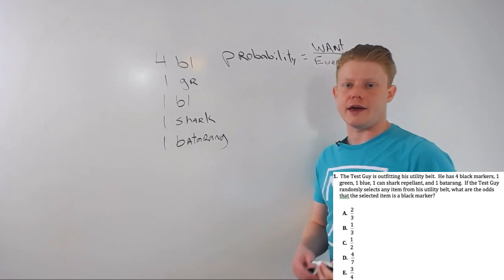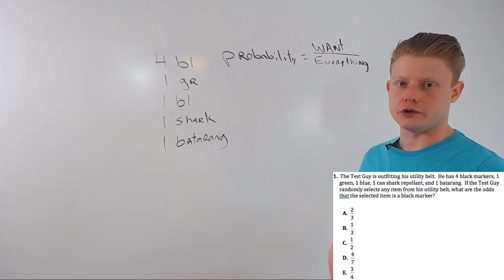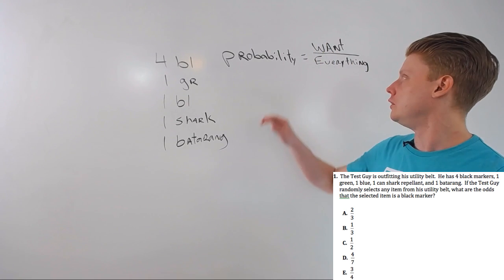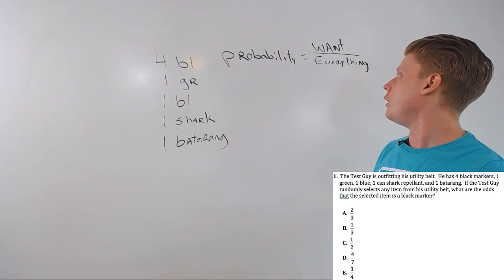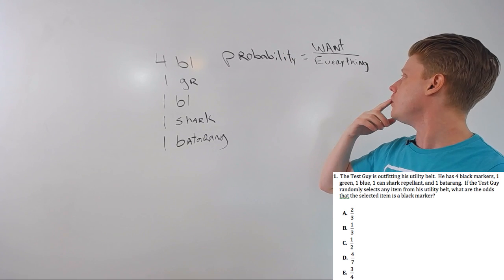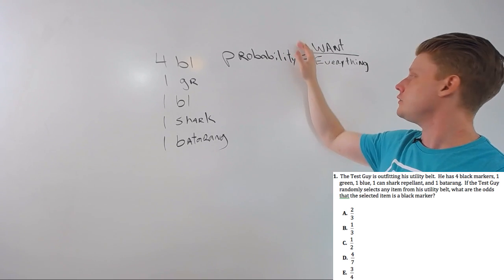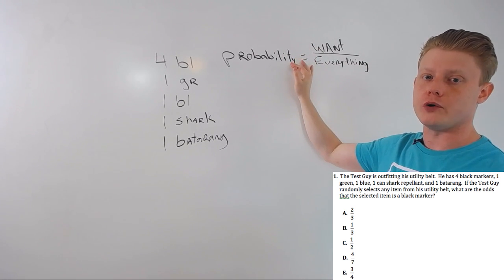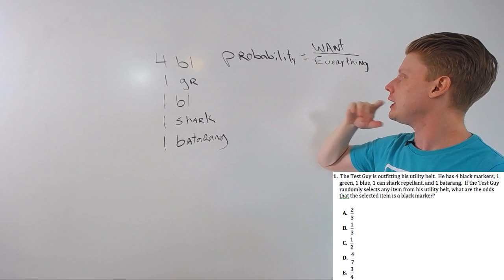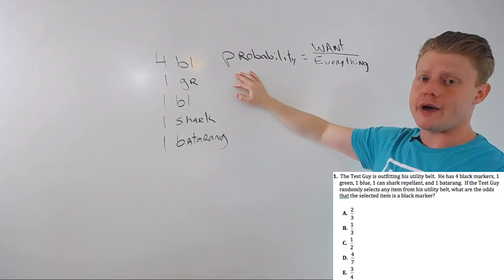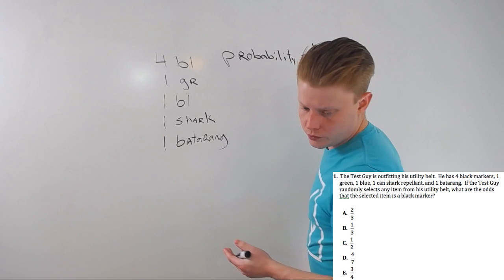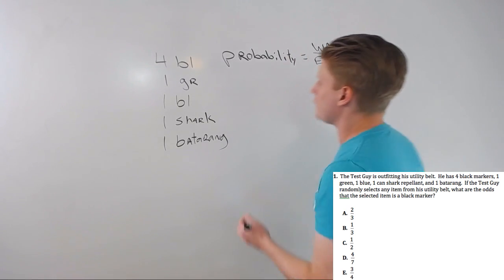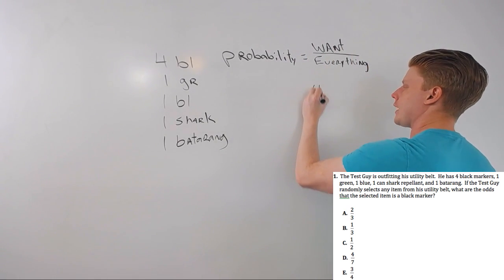If you want anything that can happen, if all outcomes are equally likely, it'd be everything over everything, which equals one. This numerator will always be smaller than or at most the same size as the denominator. In this case, we want black markers.